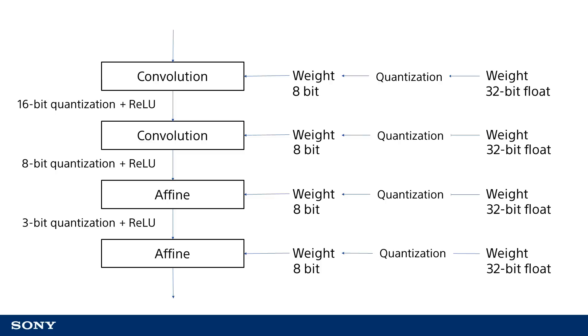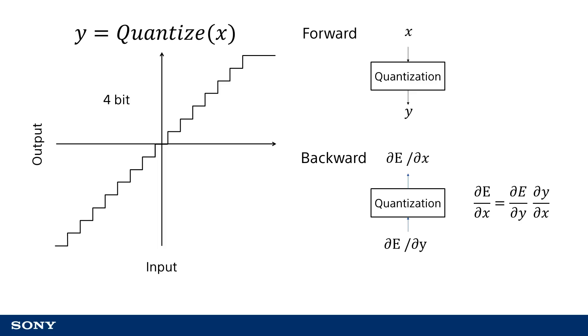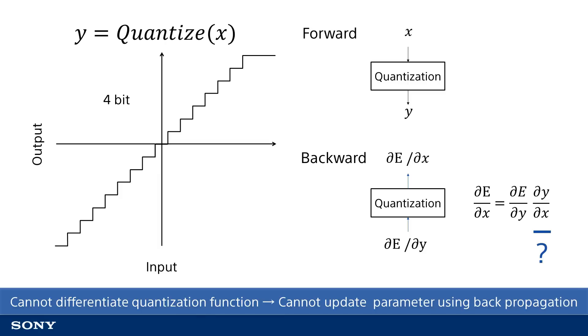One issue to be aware of when using quantization is that backpropagation as discussed in the mechanism of neural network training video cannot be used as is. Stepwise functions like this cannot be differentiated. The gradient for functions performing quantization like this will practically always be zero. This means that it will no longer be possible to update parameters using the backpropagation method discussed previously in the mechanism of neural network training video.